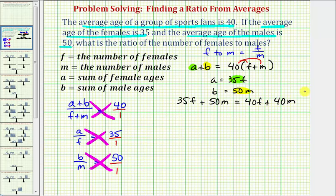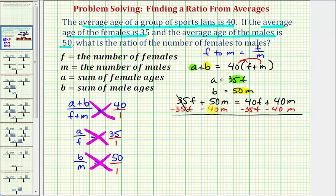Now for the next step, let's get the f terms on one side and the m terms on the other. So let's begin by subtracting 35f on both sides, and let's also subtract 40m on both sides. When we simplify, we have 50m minus 40m, that's 10m, equals 40f minus 35f, that's 5f. Now for the next step, let's go ahead and solve for f by dividing both sides by 5. So now we have 2m equals f.